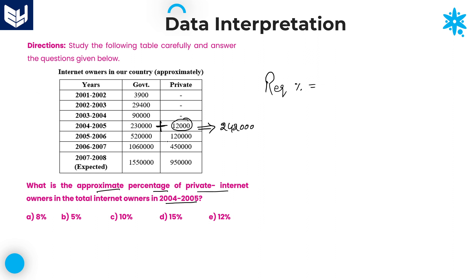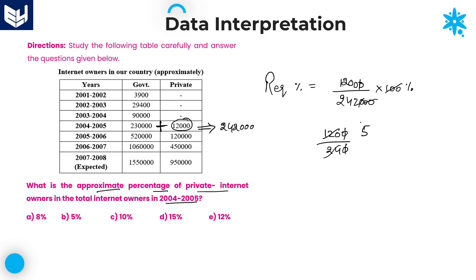The required percentage value is 12,000 divided by 2,42,000 multiplied by 100. Simplifying: 1,200 divided by 242, which is approximately 5%. If you want the exact value, it will be time-taking. So always better to go with approximations. That is 5%, option B is the right answer.